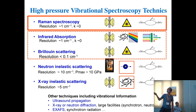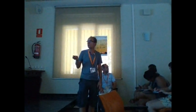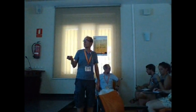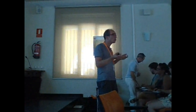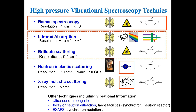I will focus mainly on Raman spectroscopy, though I will say a little about infrared. There are other techniques providing information about atomic or molecular vibrations in condensed matter: ultrasound propagation relates to acoustic phonons, X-ray or neutron diffraction gives access to the Debye-Waller factor which is directly related to vibrations, and EXAFS provides more local but also vibration-related information.